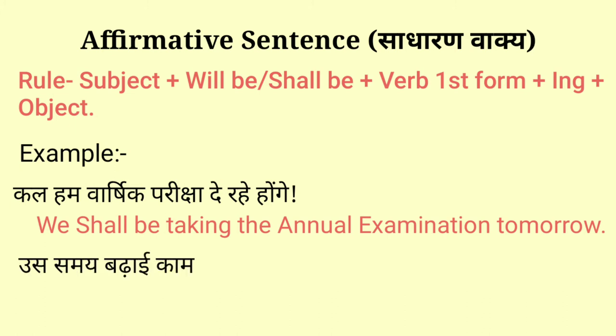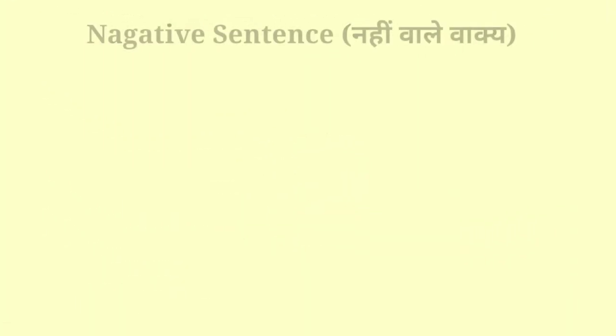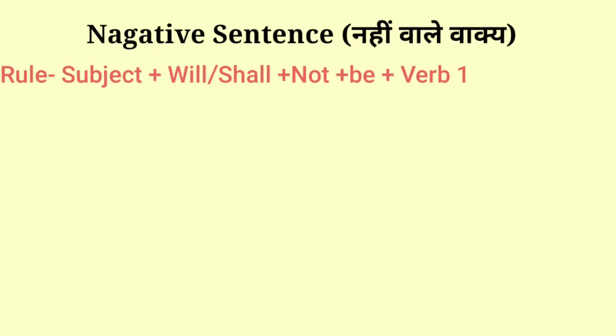Second example: 'Us samay badhai kaam kar rahe honge' — The carpenter will be working at that time. In this, 'the carpenter' is the subject, 'will be' is the helping verb, 'working' is the verb first form + ing, and the rest is the object.